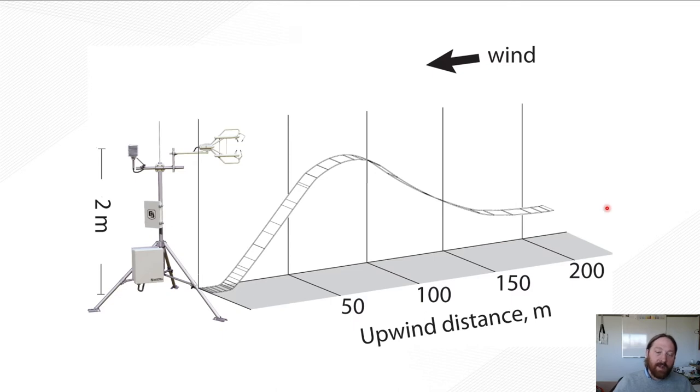Also, on the other end of the spectrum, if you go up really high, then your zone of influence or your flux contribution grows, and you may start to capture other canopies or other landscapes that aren't really part of your zone of interest, and now they're influencing your fluxes.